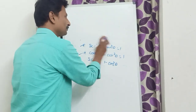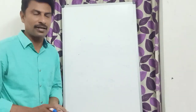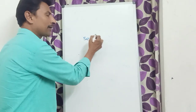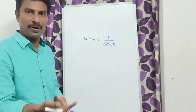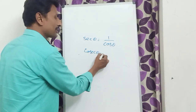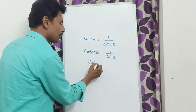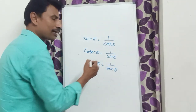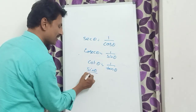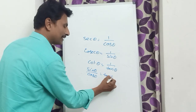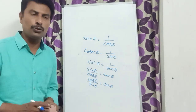Some basic relations in trigonometry are also very useful to solve the problems in this exercise. sec θ is the multiplicative inverse of cos, so you can write sec θ = 1/cos. Similarly, cosec θ is the inverse of sin, so cosec θ = 1/sin. cot θ is the inverse of tan, so cot θ = 1/tan. Also, tan θ = sin θ / cos θ, and cot θ = cos θ / sin θ.